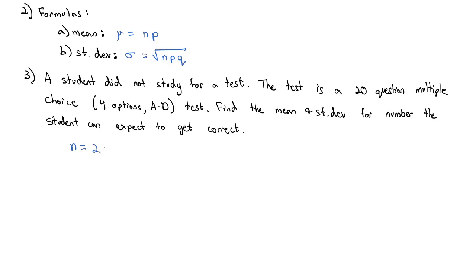We know the sample size, the number of trials, is 20 questions that the student is going to take. P, the probability of success, if there's four options, only one out of four are correct, the probability of success is 0.25. Q, the probability of failure, there are three wrong options out of four, which means the probability of failure is 0.75.